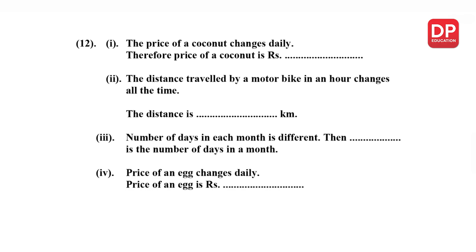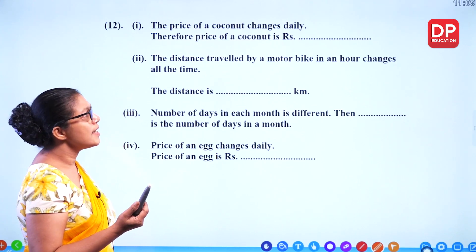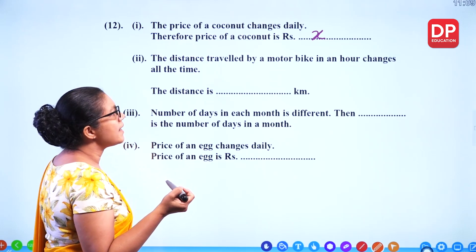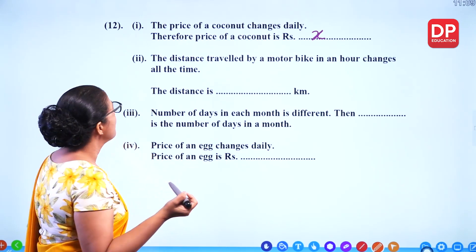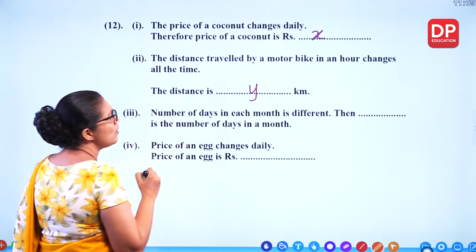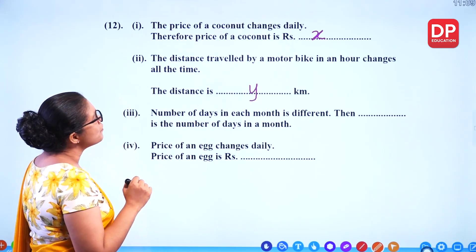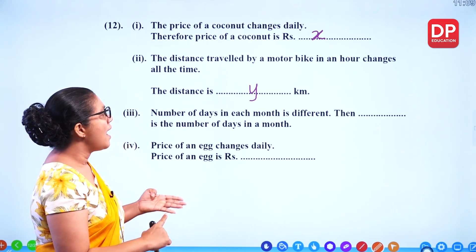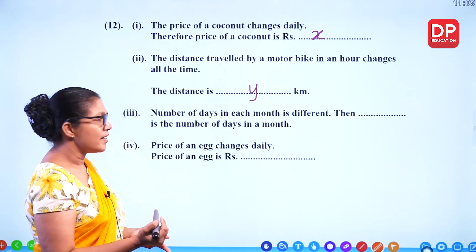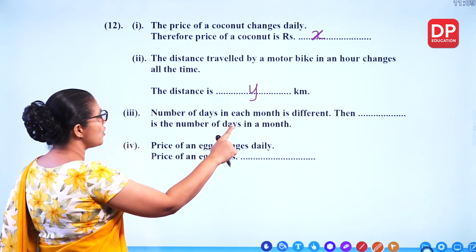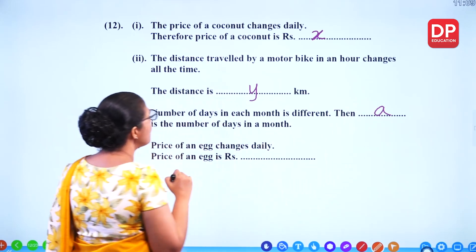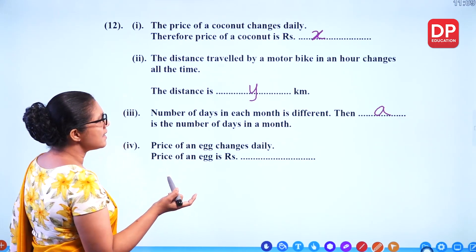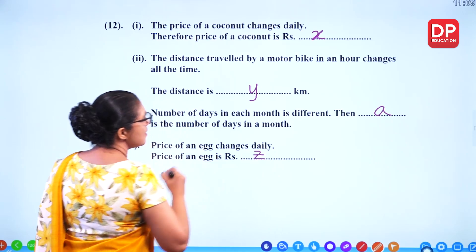The price of a coconut changes daily, therefore the price of a coconut is X rupees. The distance travelled by a motorbike in an hour changes all the time, so the distance is Y kilometres. The number of days in each month is different — February is sometimes 28 or 29, September is 30, December is 31 — so it changes, and we can use A number of days in a month. Price of an egg changes daily, so we can use any letter, we'll put Z.